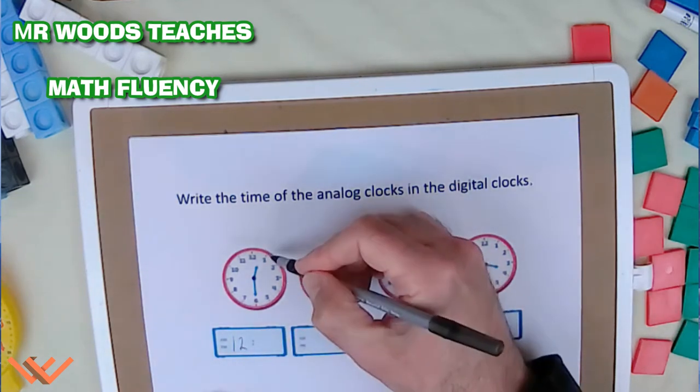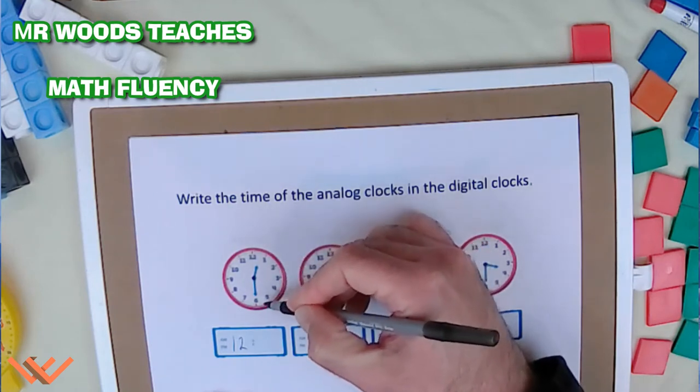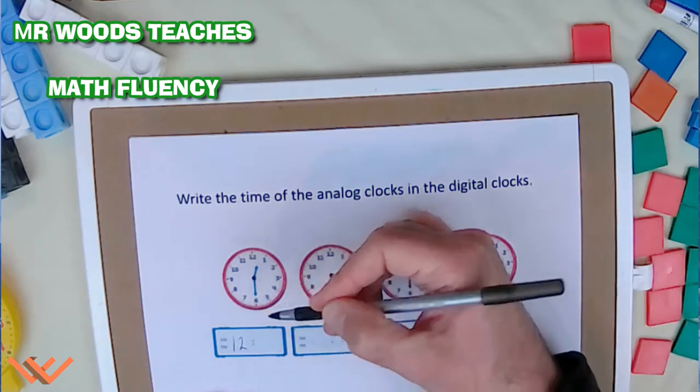And then if we look down here, so it's going to be, so I can write down just 12 as the hour. Okay, and then I can count the number of minutes. 5, 10, 15, 20, 25, 30.